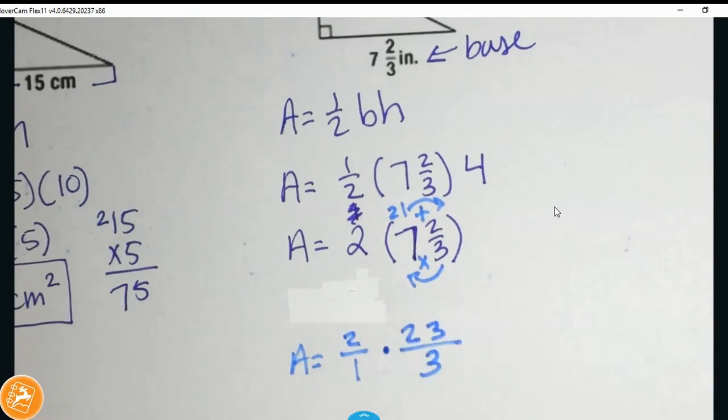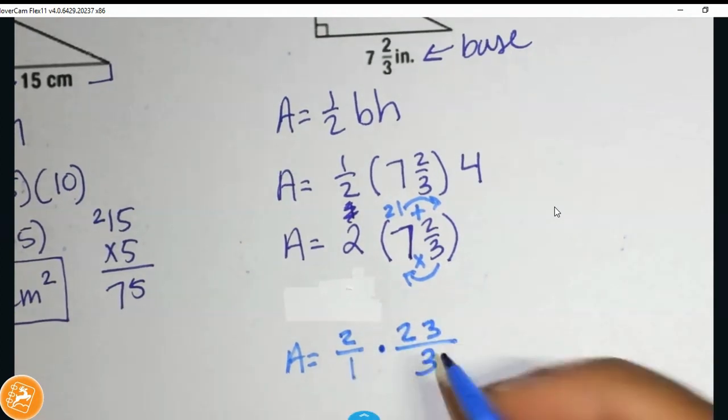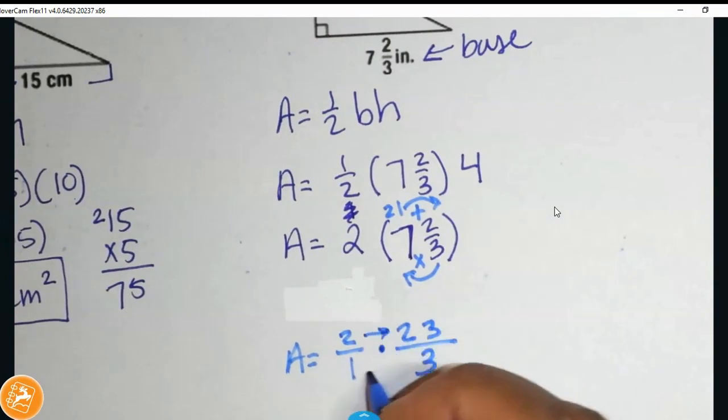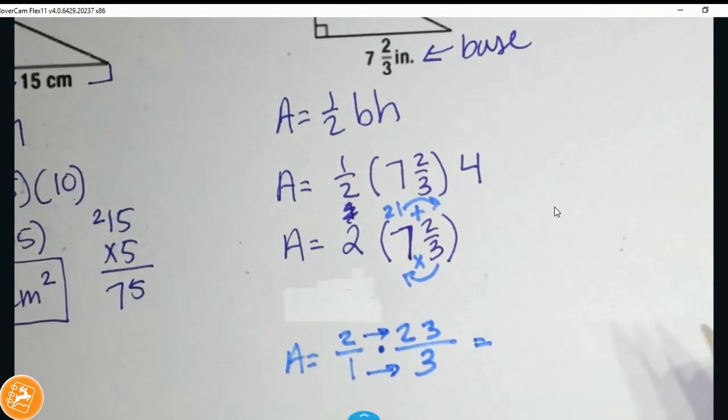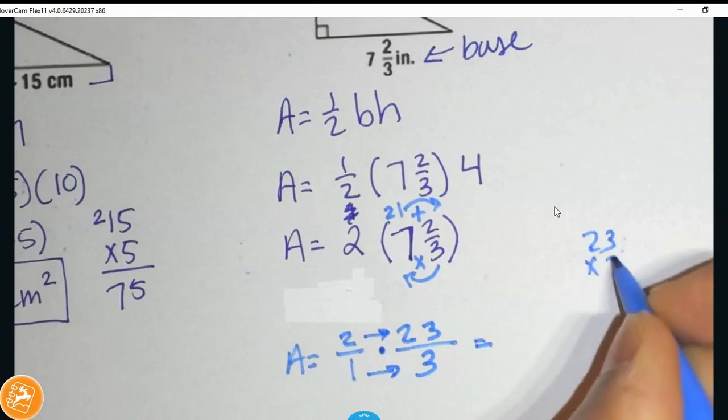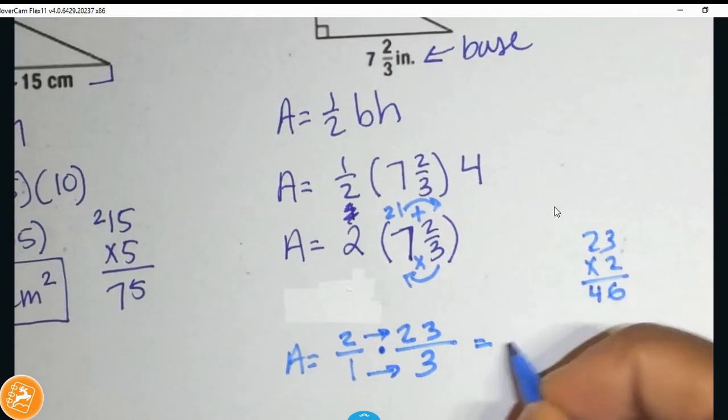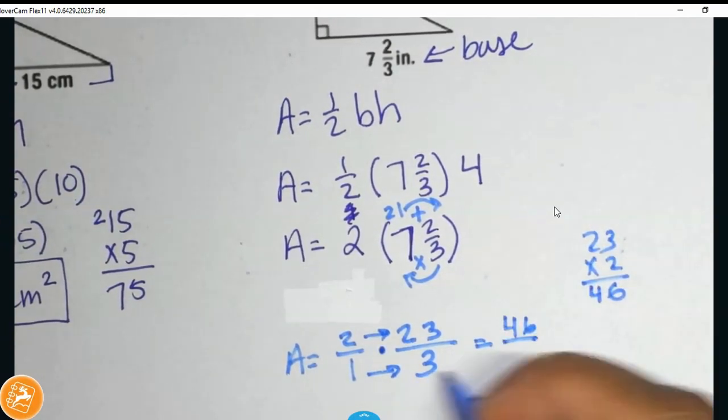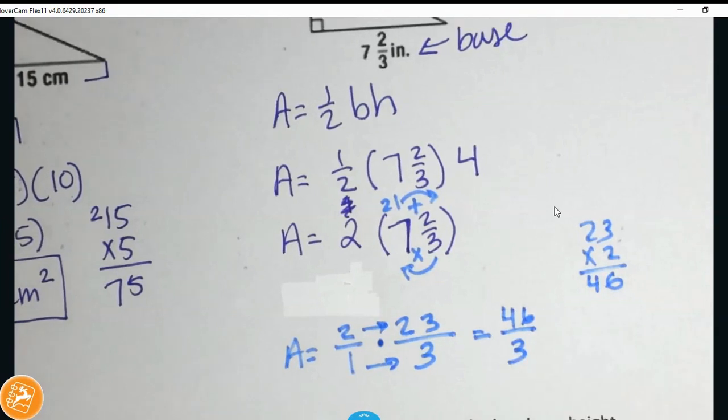So now, we're going to go ahead and work it all the way through. I can't cross-simplify in this situation, so I'm just going to multiply this straight across. I did 23 times 2, we get 46. 1 times 3 gets me 3.